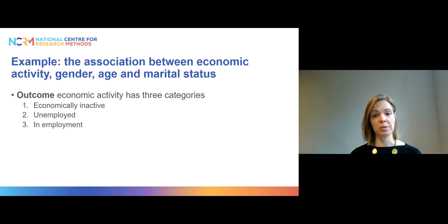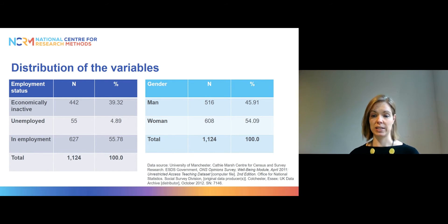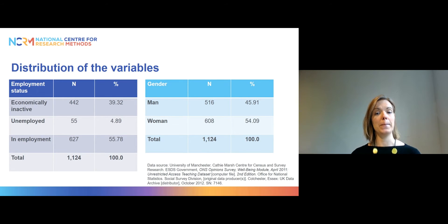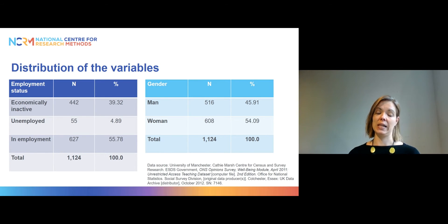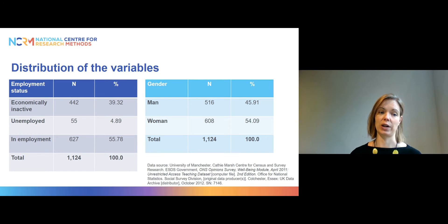Before we go ahead with the regression model, I will show you some descriptive statistics. Most of the people in our sample, which comes from an ONS opinion survey wellbeing module from April 2011, were in employment — that was 56% and the largest group. About 40% were economically inactive and about 5% were unemployed.